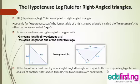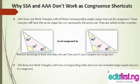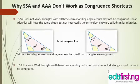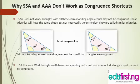However, there are two other ways that do not work as congruency shortcuts. The two ways are SSA (side-side-angle) and AAA (angle-angle-angle). AAA doesn't work because to know if two triangles are congruent, we must have at least one side. In AAA we only have angles. So triangles with the same three angles are not congruent — they are just similar triangles. We must have at least one side for congruence.